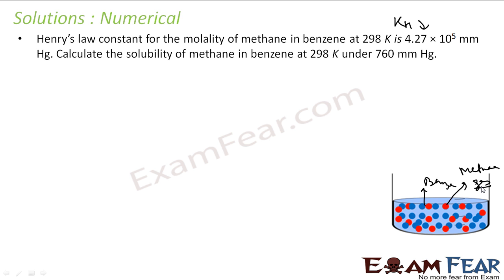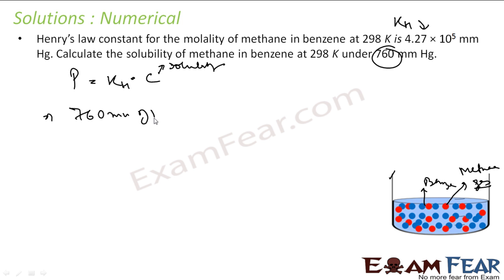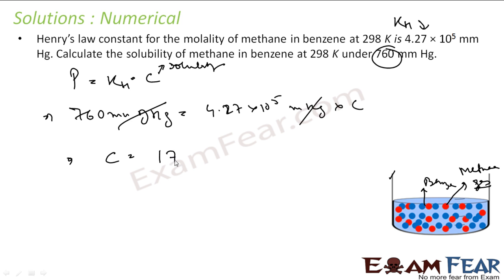We know that pressure equals KH into solubility. The pressure given is 760 mm Hg. So 760 mm Hg equals KH, which is 4.27 × 10⁵ mm Hg, into solubility. The mm Hg units cancel, giving solubility as 1.78 × 10⁻³.